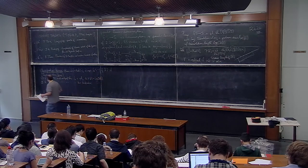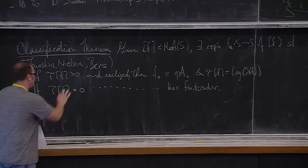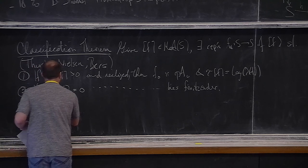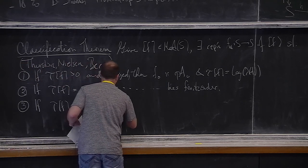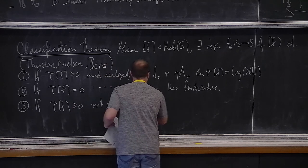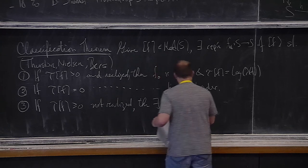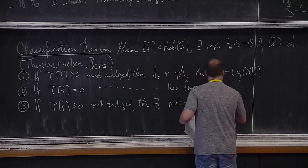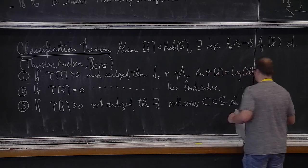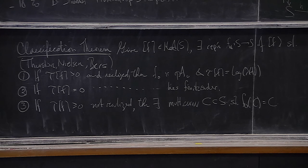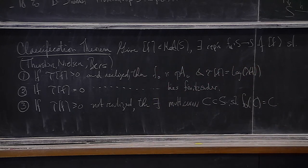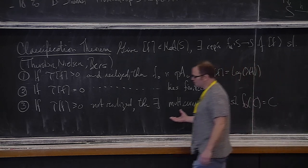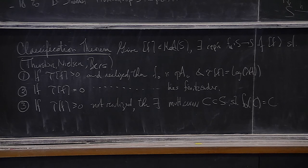The third case: translation length zero or positive, not realized. There exists a multi-curve C inside S such that F₀(C) = C. This is the reducible case Javier mentioned. Being reducible — infinite order reducible — can be recognized in terms of the action on Teichmüller space. A multi-curve is an embedded one-submanifold: a disjoint union of essential simple closed curves, where essential means homotopically non-trivial.